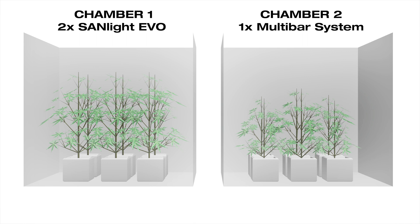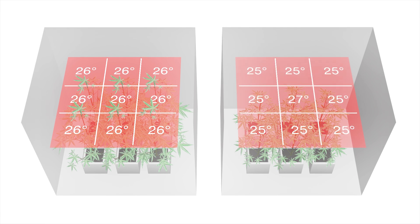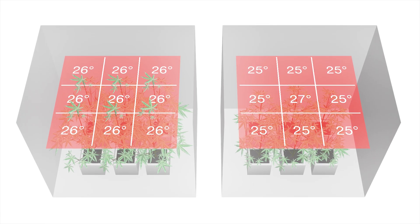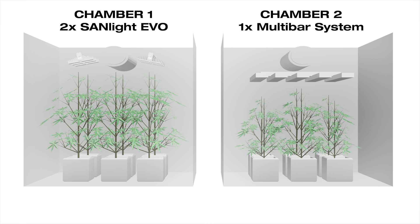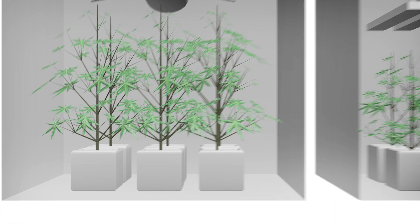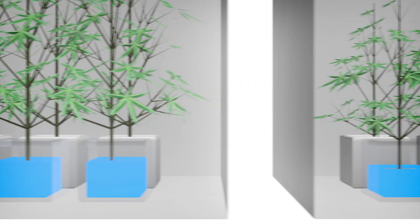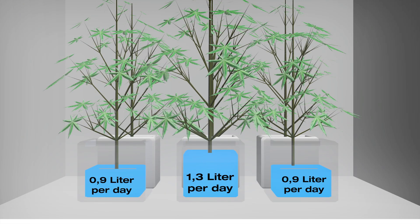Both rooms have the same temperature of 28 degrees. While the leaf temperature in the uniform chamber is at 26 degrees, the leaf temperatures in the non-uniform chamber vary between 25 to 27 degrees. With 1000 micromoles per square meter per second leading to a water need of one liter per plant per day, all plants in the uniform chamber need roughly about a liter a day, while plants in the other chamber need between 0.9 to 1.3 liters a day.